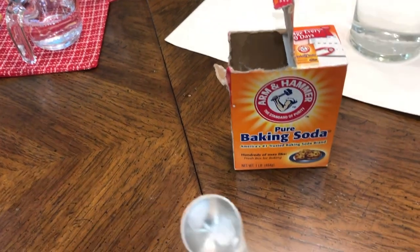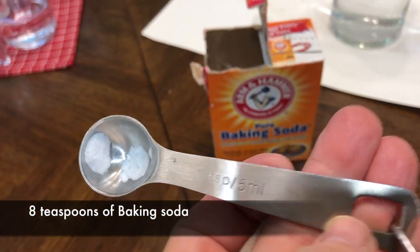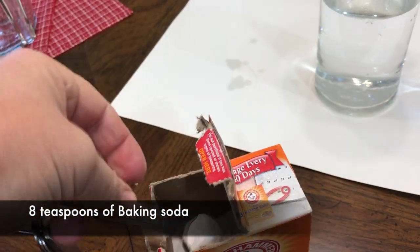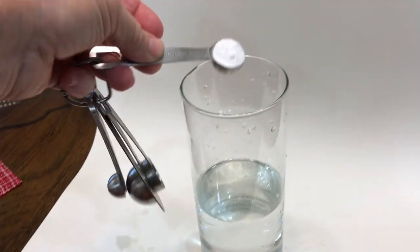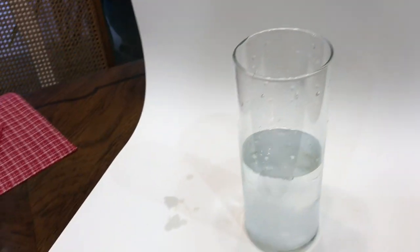Then we're going to take the baking soda, just your regular old baking soda, and you're going to do eight tablespoons into there, and then once we get that up, we're going to stir it.